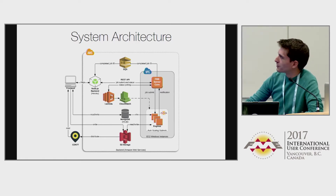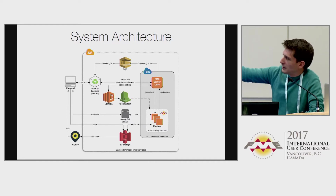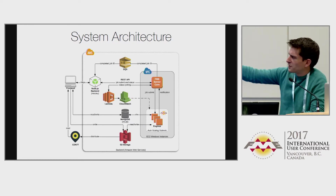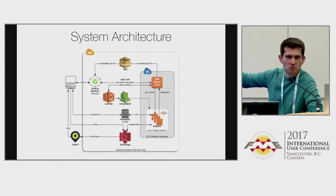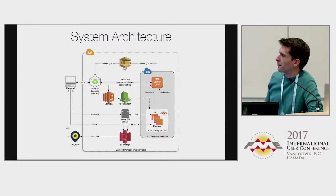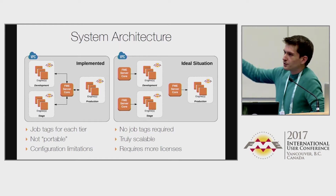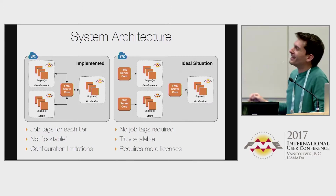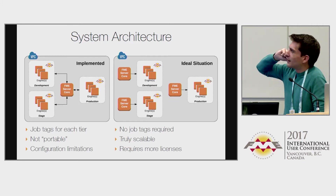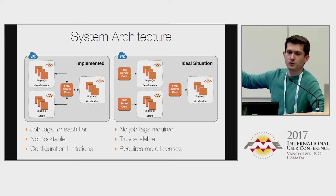Everything in the dotted line on our diagram was running directly or indirectly on Amazon technology — except for CDN77, a Swiss CDN provider we switched to because we weren't happy with CloudFront performance. Focusing on the FME side: ideally you'd do it the way shown on the right of the diagram. That's the easy and best way. What we implemented was on the left — one server core shared across development, production, and staging tiers.